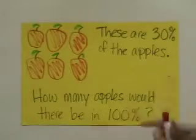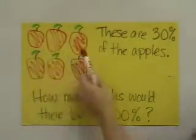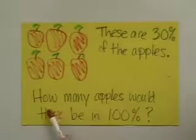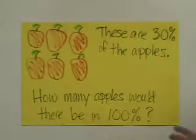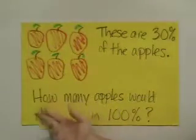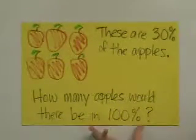In this problem, we're told that these six apples represent 30% of all of the apples, and the question is, how many apples would there be in 100%? Kind of like, if this is 30% of the barrel, how many apples would be in the entire barrel?